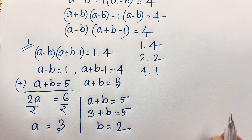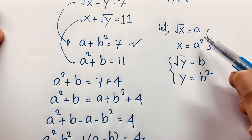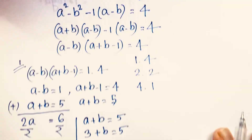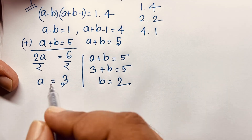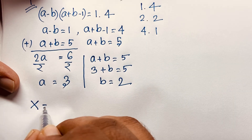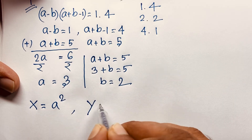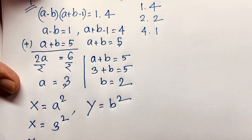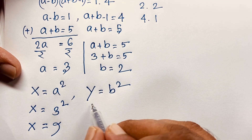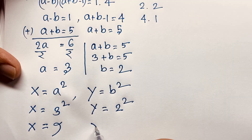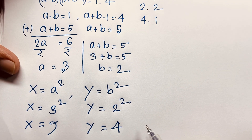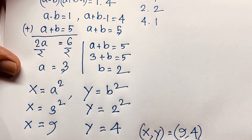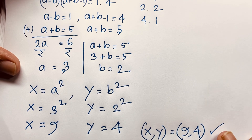Recalling our substitutions: x equals a squared and y equals b squared. So x equals 3 squared equals 9, and y equals 2 squared equals 4. Therefore x equals 9 and y equals 4, which are positive integers.